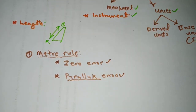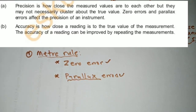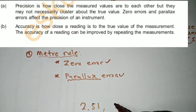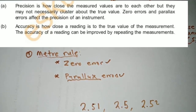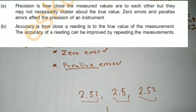A measuring instrument can give a precise but not accurate measurement. Precision is how close the measured values are to each other. For instance, if you measure and get 2.51, then 2.5, then 2.52 — notice these are close to each other, so we call this precision.